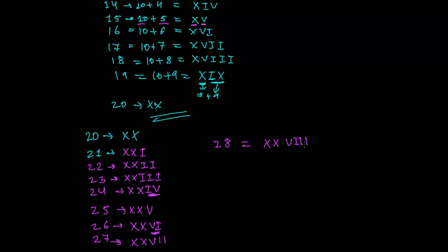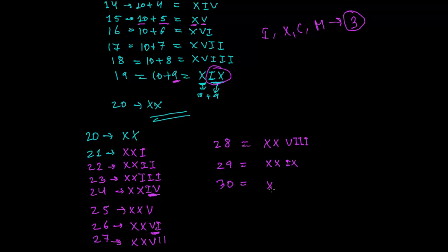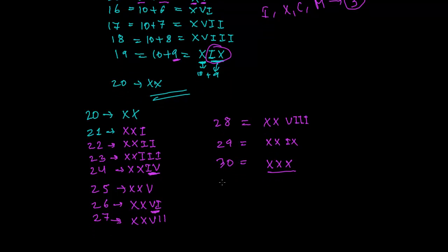Some people write Roman numerals in small letters — that's acceptable, but it is better to always write in capitals. For 29, it's XX plus IX: XXIX, since IX represents 9. For 30, since I and X can be repeated up to three times, we write three X's together: XXX represents 30.